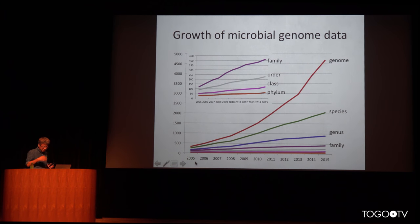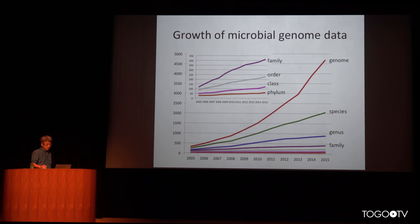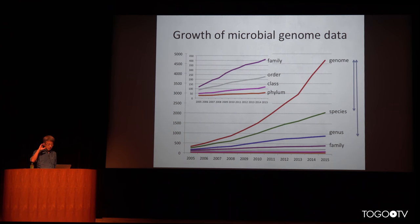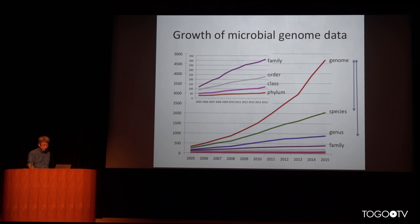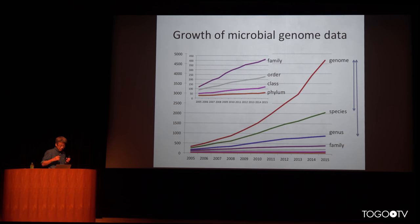This graph shows the growth of the microbial genome data stored in our database. The number has increased, and recently, because of the new sequencing technology, the data is increasing very rapidly. The most important part is the difference between the number of genomes and the number of species, which indicates that genome data of closely related species or genomes are increasing more and more.